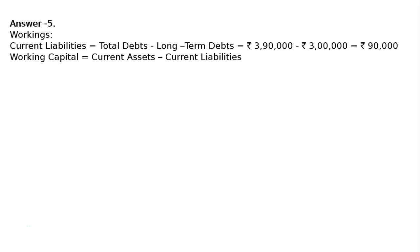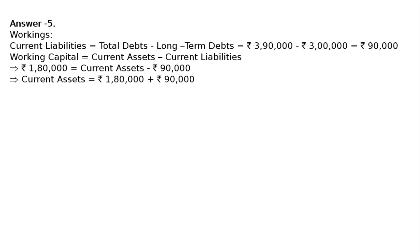Working capital is current assets minus current liabilities. Here we have been given working capital Rs. 1 lakh 80,000. To find current assets: Rs. 1 lakh 80,000 equals current assets minus current liabilities Rs. 90,000. Transposing, current assets equals Rs. 1 lakh 80,000 plus Rs. 90,000, hence current assets is equal to Rs. 2 lakh 70,000.